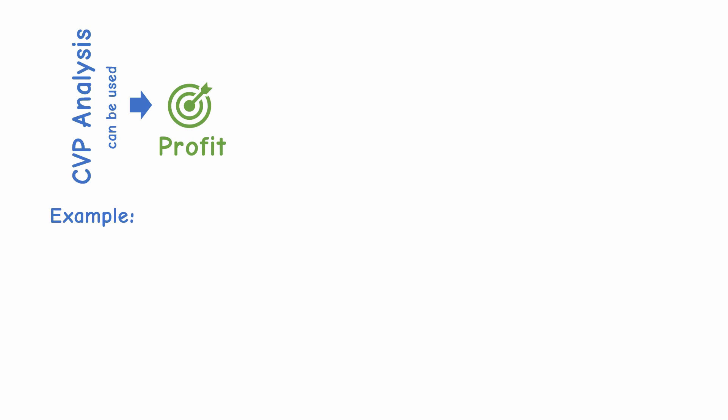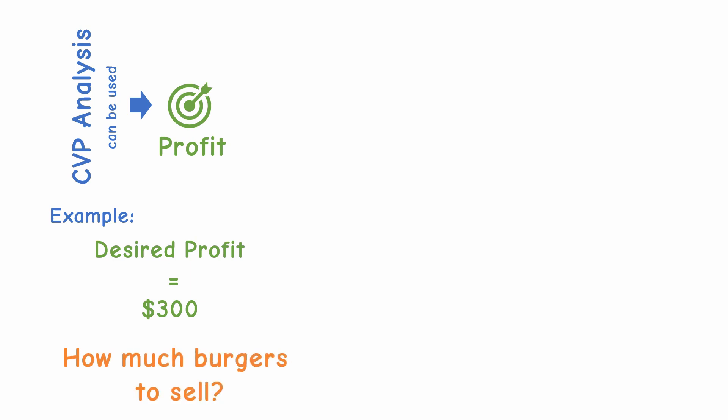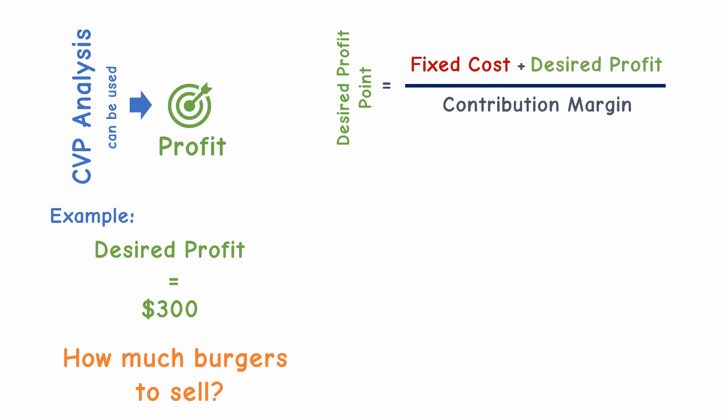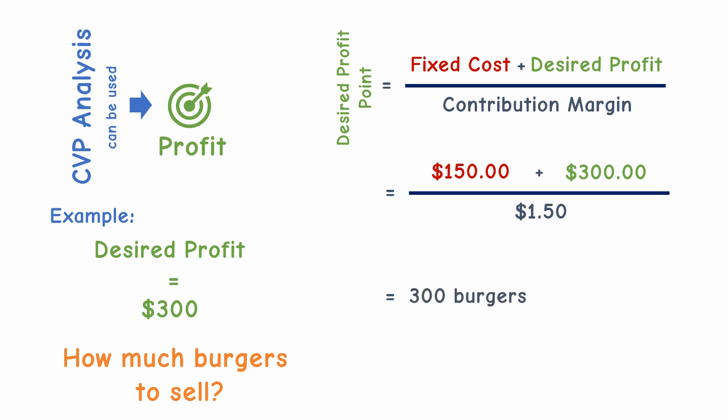You may also use the CVP analysis to know how much you need to produce in order to achieve a target profit. Say for next month you wish to generate a profit of three hundred dollars — how much do you need to sell to achieve this? To get this target profit point, you just need to add your desired target profit to the fixed costs and divide it by the contribution margin. So to achieve a three hundred dollar profit, you need to sell 300 burgers, or generate 750 dollars in sales.